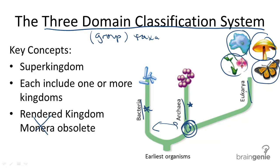Another fact to note is that the domain including eukaryotic organisms — eukarya — is the most recent to evolve. It includes vascular and nonvascular plants, fungi like yeast, mold, and mushrooms, animals, and protists. Check out our other videos to study the differences in the six kingdoms that make up these three domains.